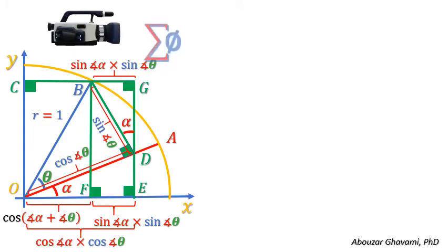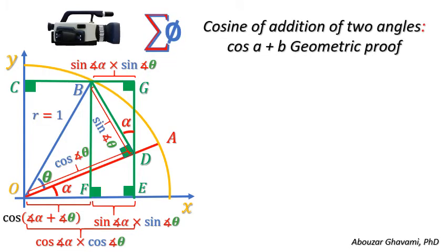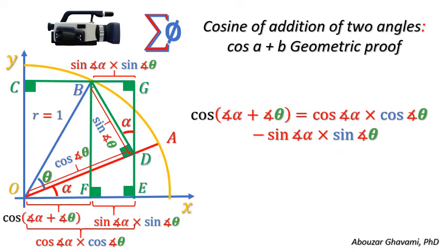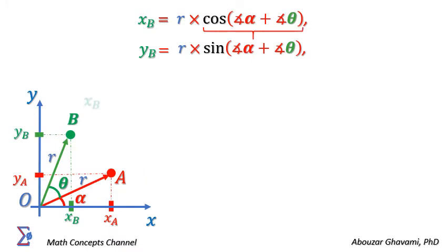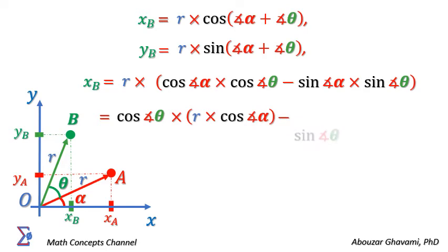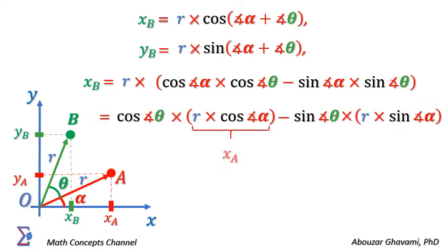In a video published on this channel titled 'Cosine of addition of two angles,' we showed that cosine of (alpha plus theta) equals cosine of alpha times cosine of theta minus sine of alpha times sine of theta. Expanding the term cosine of (alpha plus theta), we have x of B equals R times cosine of alpha times cosine of theta minus sine of alpha times sine of theta, which equals cosine of theta times R times cosine of alpha, minus sine of theta times R times sine of alpha. Note that R times cosine of alpha is x of A, and R times sine of alpha is y of A. Thus, x of B equals cosine of theta times x of A minus sine of theta times y of A.